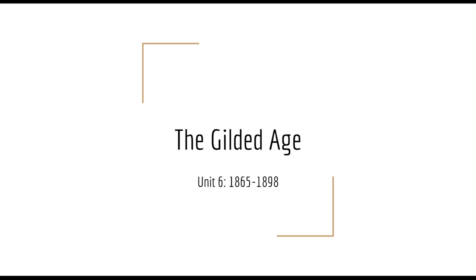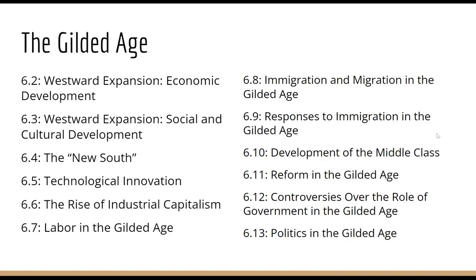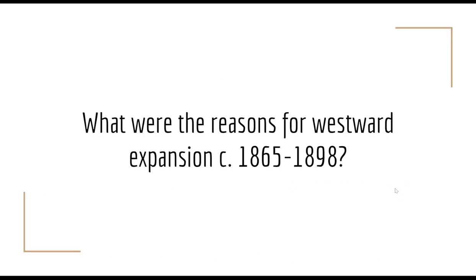Hi there and welcome to video number one of unit six, the Gilded Age, from 1865 to 1898. We're going to start right away with 6.2, which is westward expansion. 6.2 deals with westward expansion and economic development. In our next video we'll talk a little bit about social and cultural development, but first we're going to talk about economic development.